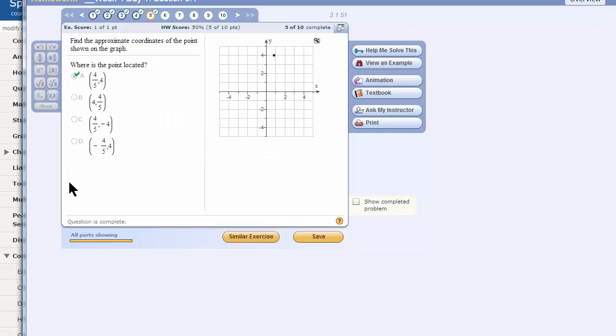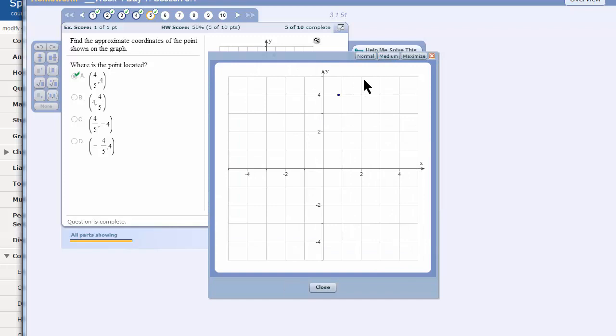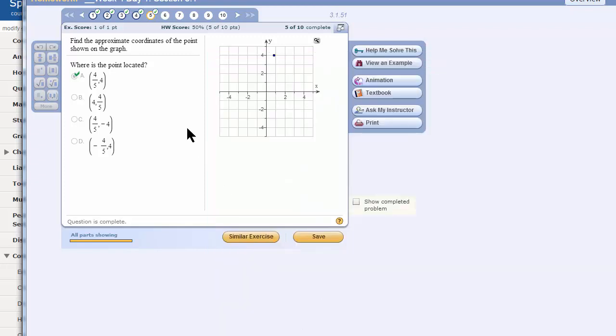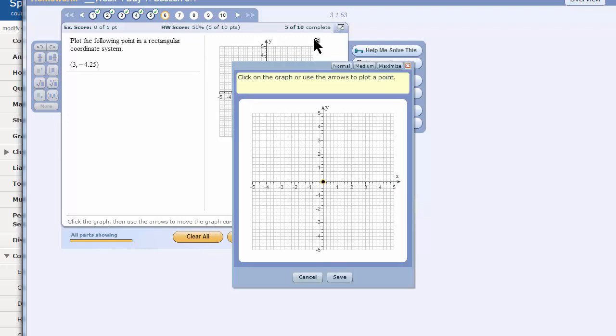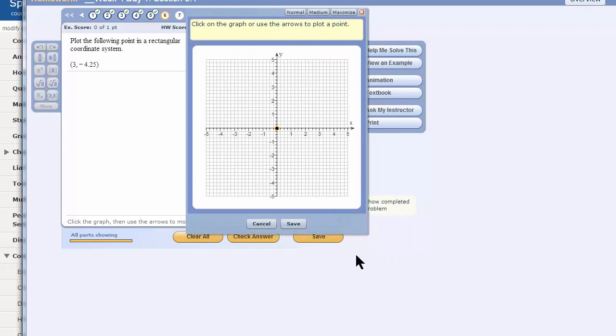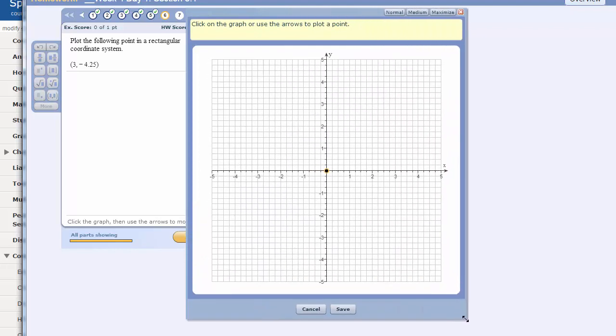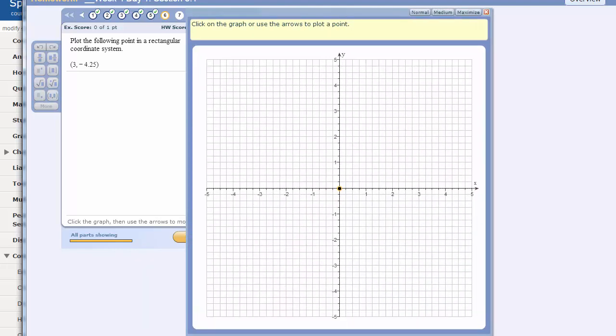I should have made this bigger. I completely forgot to make it bigger. That would have been much more visible. Always increase the size of your graph if you need it. Okay. We can do this now. 3 on the x-axis is pretty easy to get to.